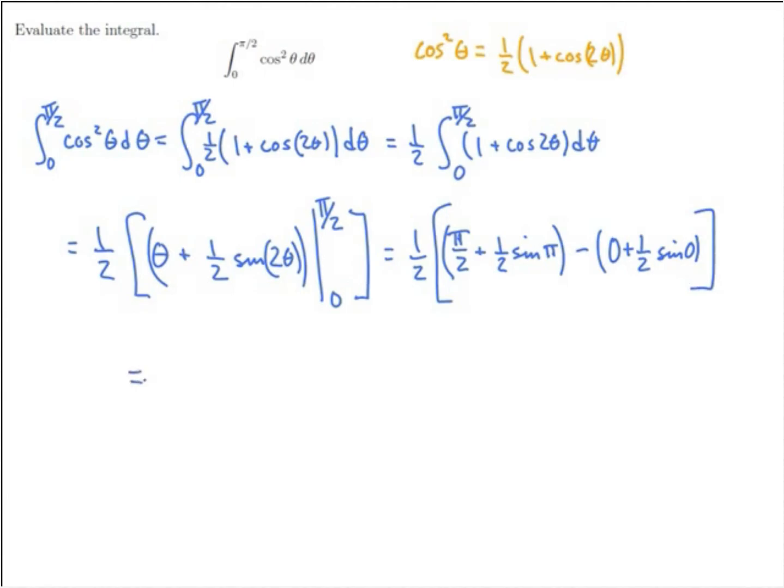So this is 1 half times, well sine of pi is 0, and sine of 0 is 0, so all I have left out of all of that inside is just pi over 2. And I'm left with pi over 4 as the definite integral. Thank you.